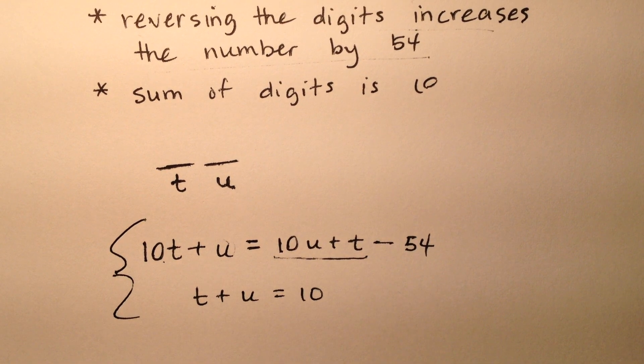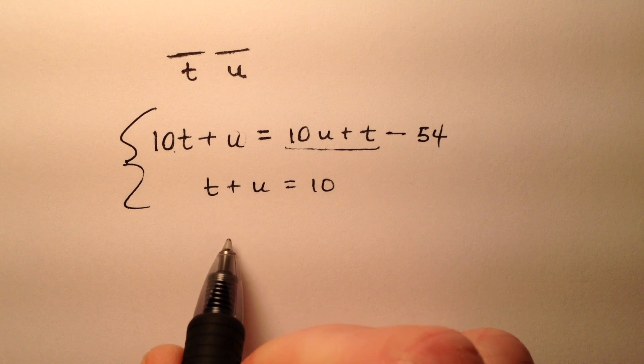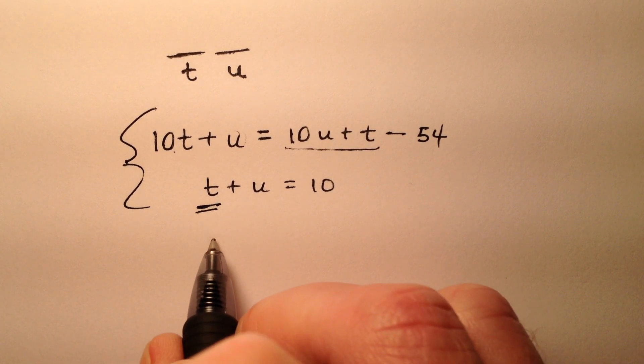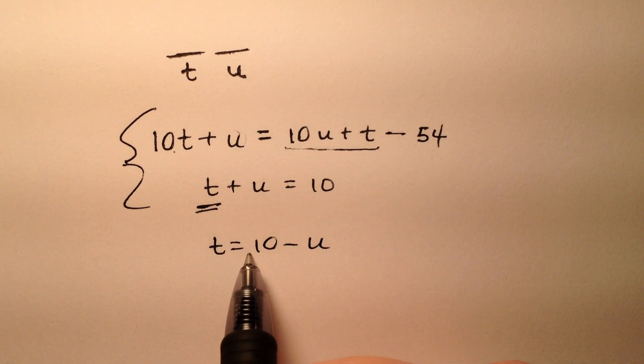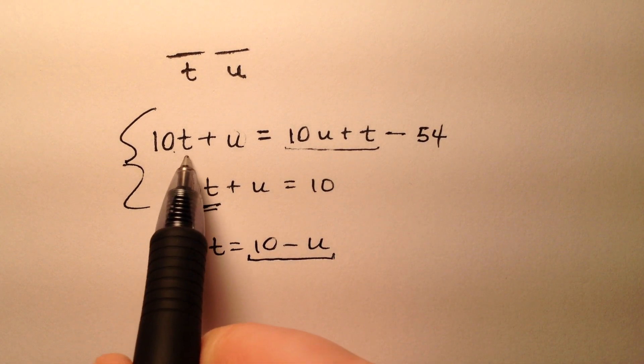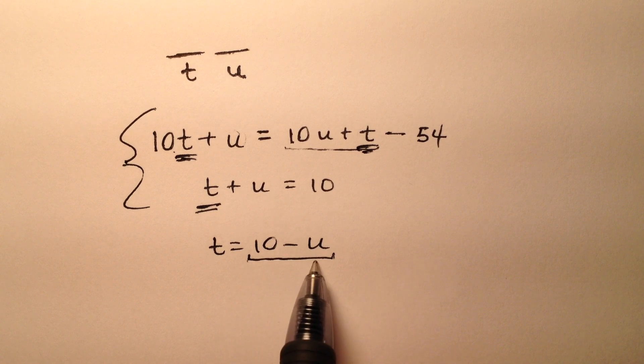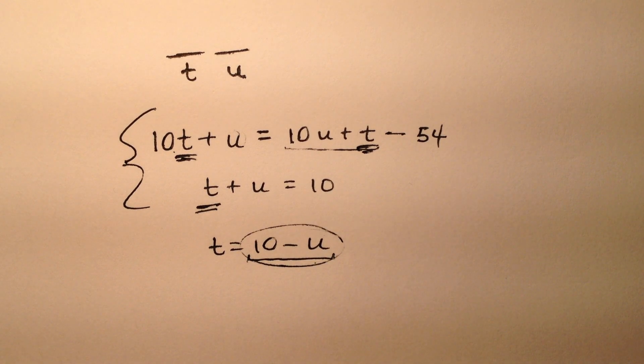Here I have a nice system of equations. I could solve for T and use substitution, so T equals 10 minus U. Every time I see a T in this first equation, I replace it with this expression, 10 minus U.